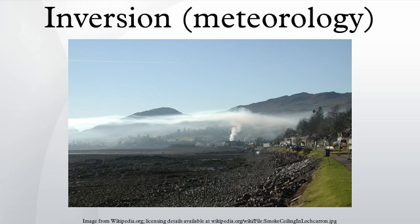In meteorology, an inversion is a deviation from the normal change of an atmospheric property with altitude. It almost always refers to a temperature inversion, that is an increase in temperature with height, or to the layer within which such an increase occurs.